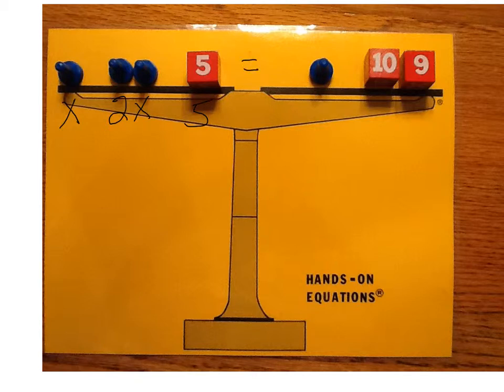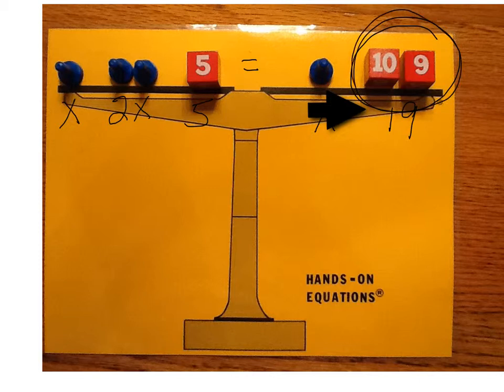This is equal to x plus 19. Now notice we don't have 19 on the cubes, so we can take any combination we want that equals 19. So we're going to put a 10 and we're going to put a 9. So 10 plus 9 is equal to 19, so we have these two cubes here representing 19.